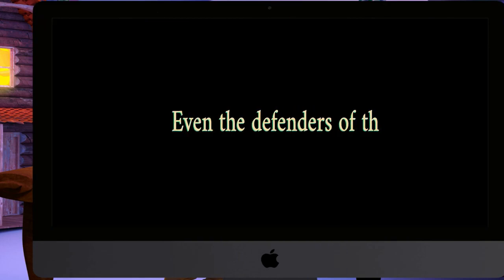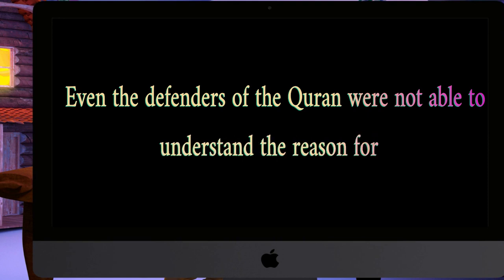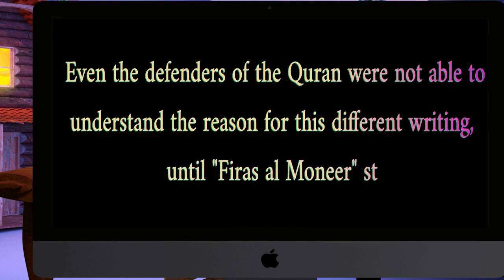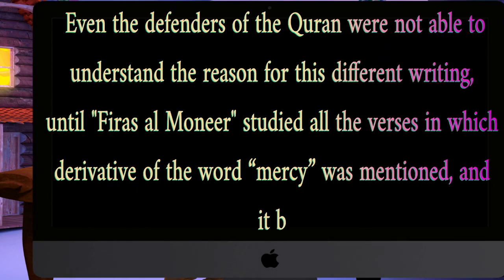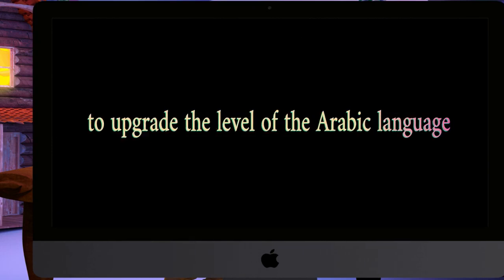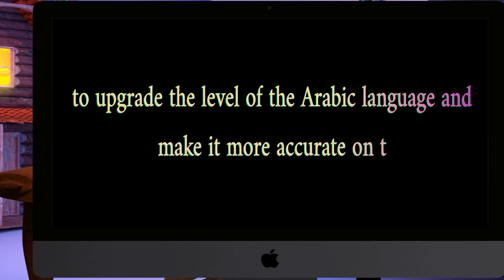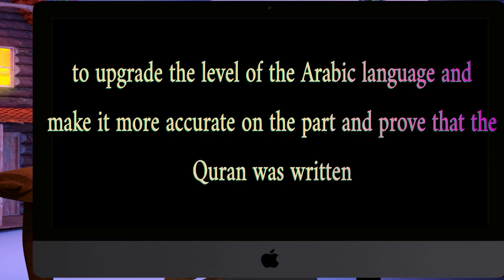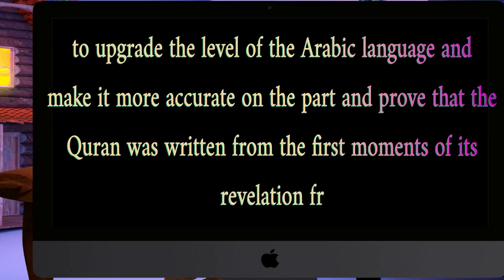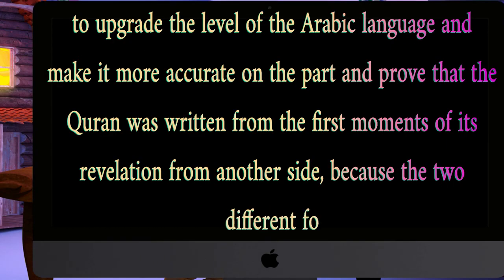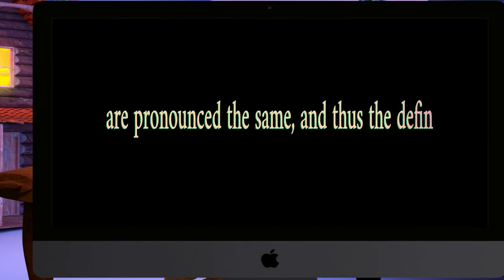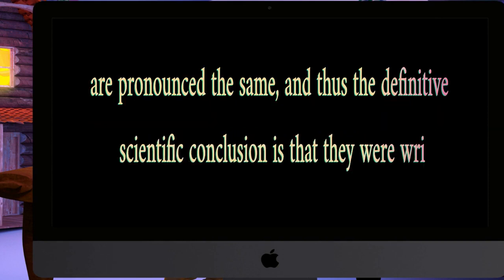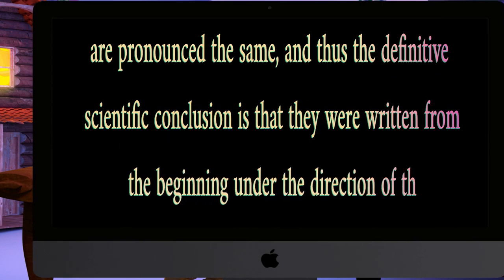Even the defenders of the Quran were not able to understand the reason for this different writing, until Fayras al-Munir studied all the verses in which derivatives of the word mercy were mentioned, and it became clear to him that this different form aims to upgrade the level of the Arabic language and make it more accurate. It also proves that the Quran was written from the first moments of its revelation, because the two different forms of writing in our example are pronounced the same — thus the definitive scientific conclusion is that they were written from the beginning under the direction of the Prophet Muhammad.